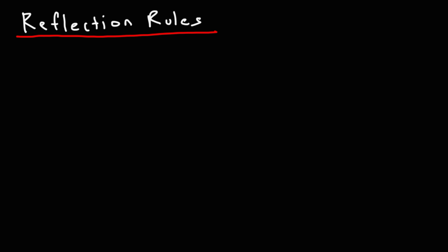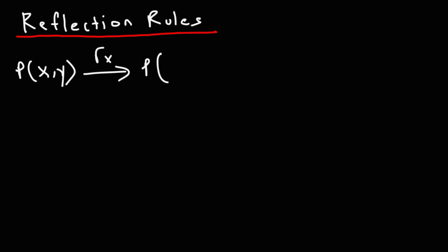Let's begin our discussion by going over some reflection rules. If you want to reflect the point (x, y) about the x-axis, all you need to do is change the y-coordinate. You need to change it from y to negative y — basically negate the y value.